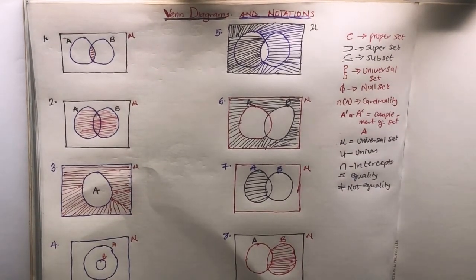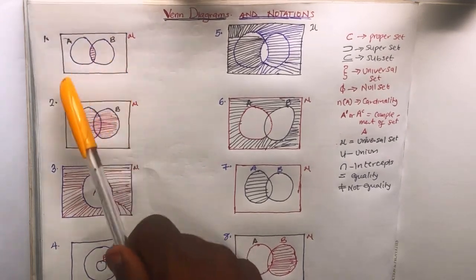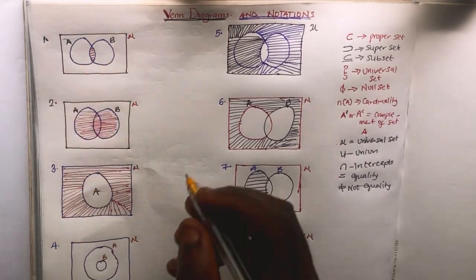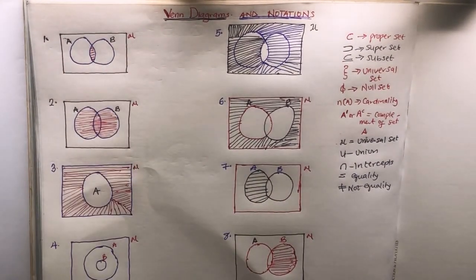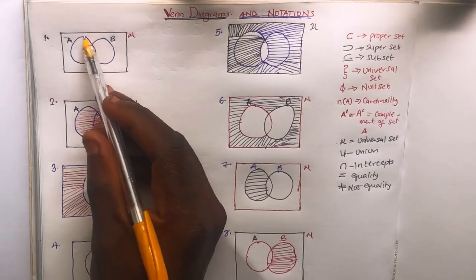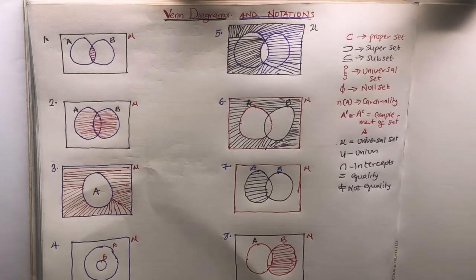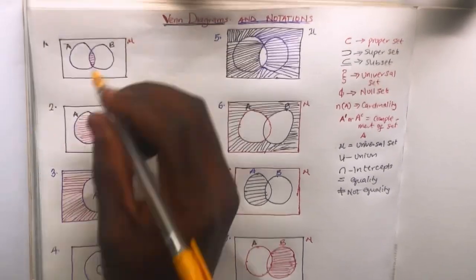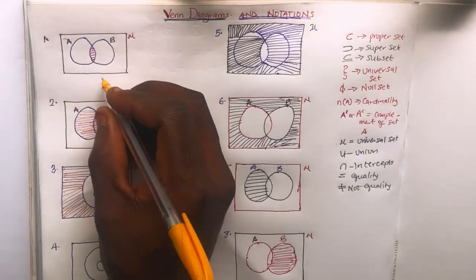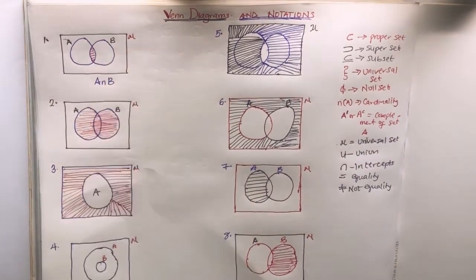Now let's move to the Venn diagram. Let's say you have set A and set B inside your universal set. The shaded portion in the middle — if you look at it, these are set A and set B — what do you think the shaded portion indicates? The shaded portion is A intersection B.